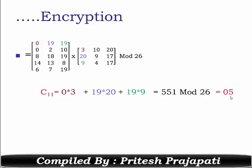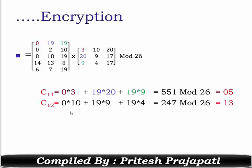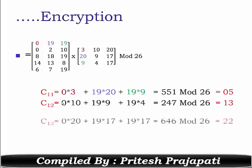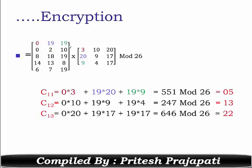Similarly, to calculate the value of C(1,2) you perform this operation. For C(1,3), you multiply the first row with the third column of the key matrix.